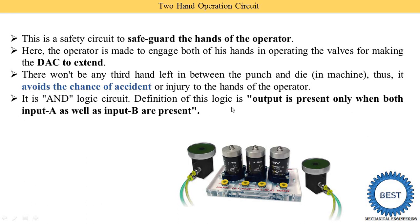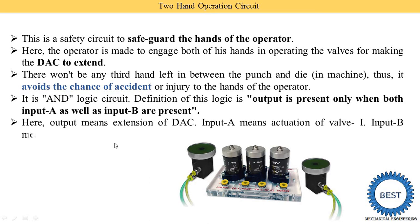The definition of AND logic: output is present only when both input A as well as input B are present. Input A comes from switch one and input B is supplied from switch two to the system. At that time we are able to achieve the output — here output means extension of the double acting cylinder, input A means actuation of valve one, and input B means actuation of valve two.